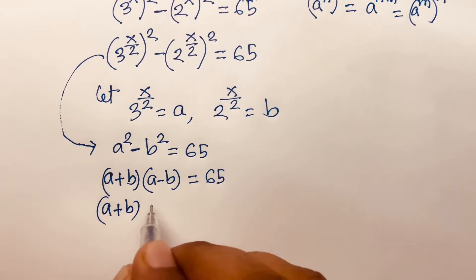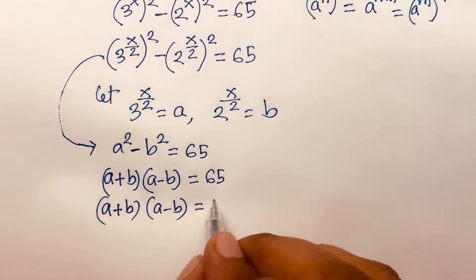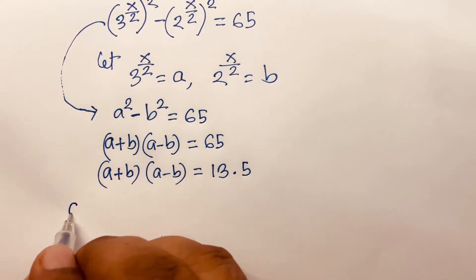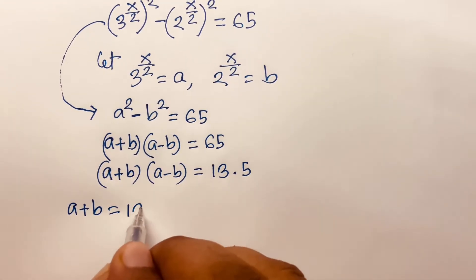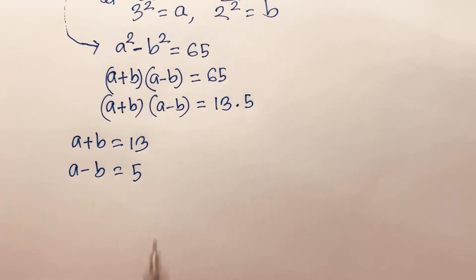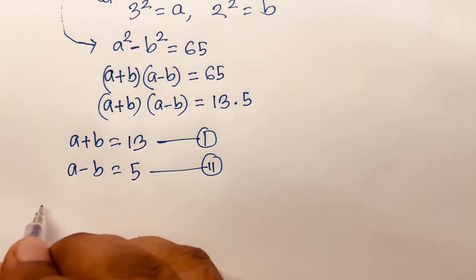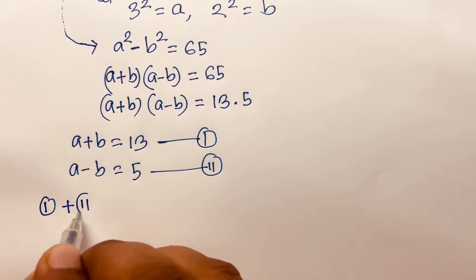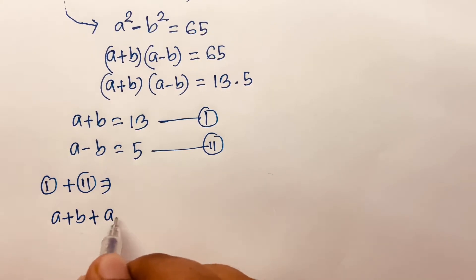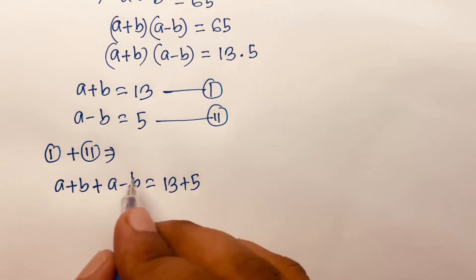So (a + b)(a - b) equals 65, which factors as 13 times 5. Therefore, a + b equals 13 and a minus b equals 5. Adding the first and second equations: (a + b) + (a - b) equals 13 plus 5, and the b terms cancel.